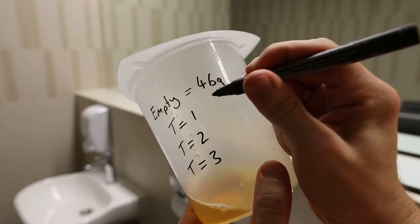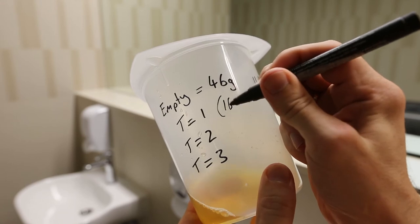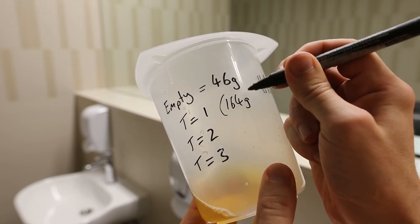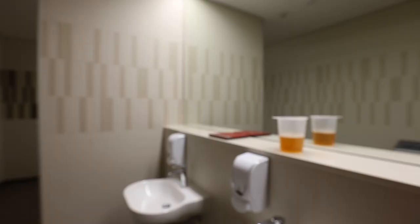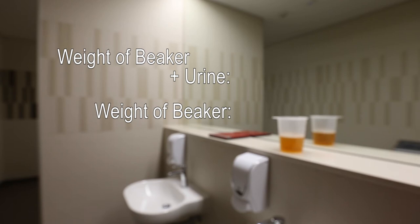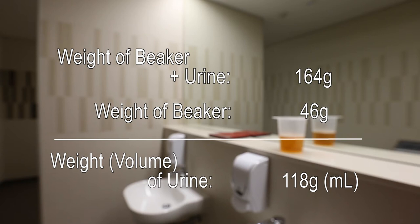Since aqueous solutions have approximately the same density as water, that is, 1 gram per ml, we can use the weight of the urine in order to accurately measure its volume. In this example, the beaker plus urine weighed 164 grams. The empty beaker weighed 46 grams. So therefore, the weight of the urine was 118 grams. In other words, we have 118 ml of urine.